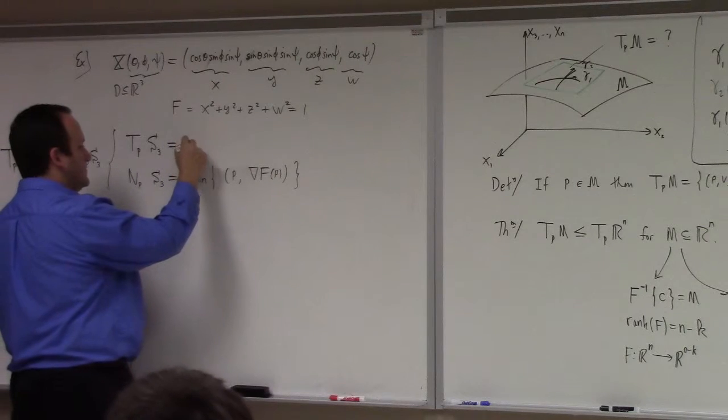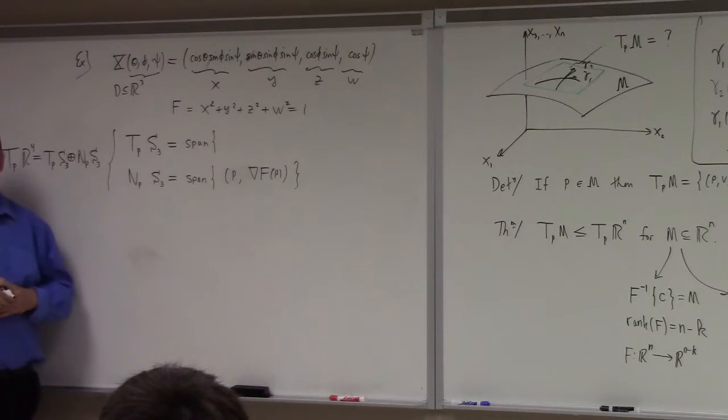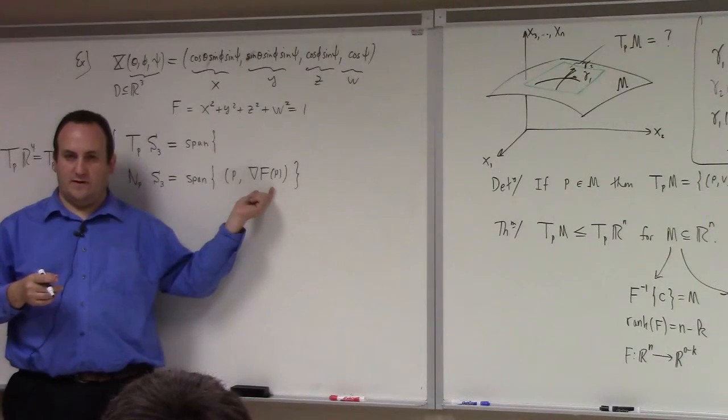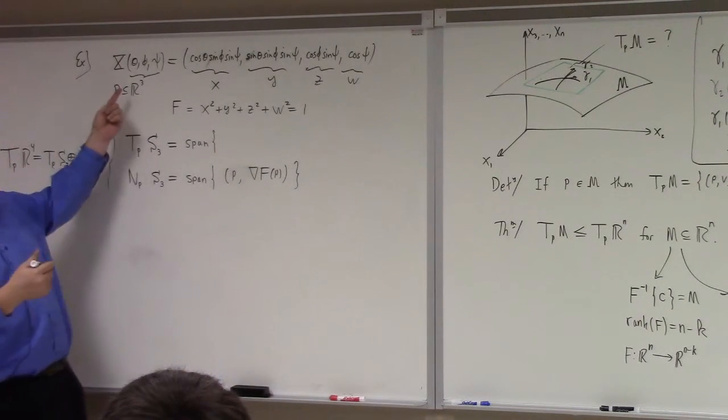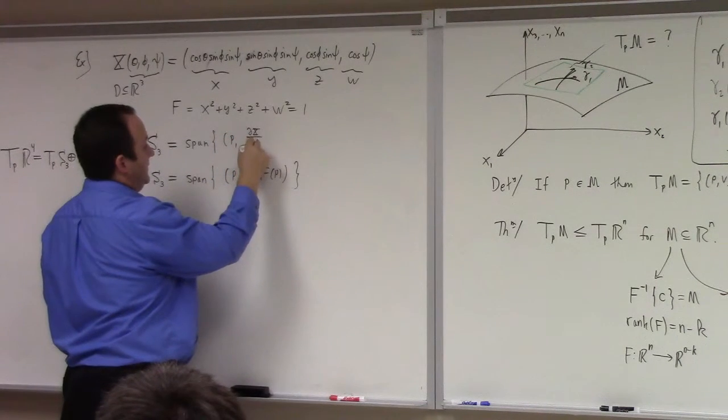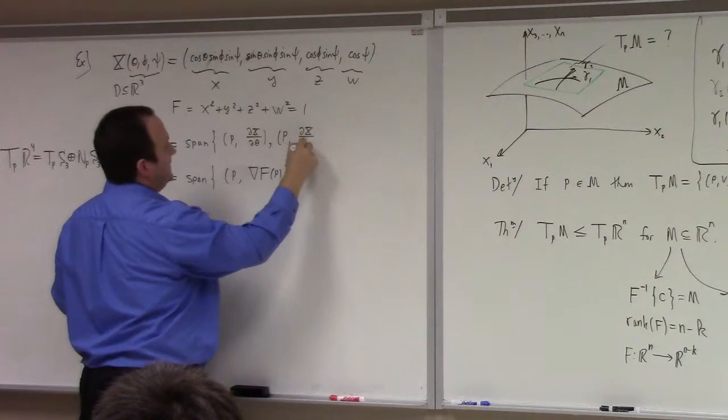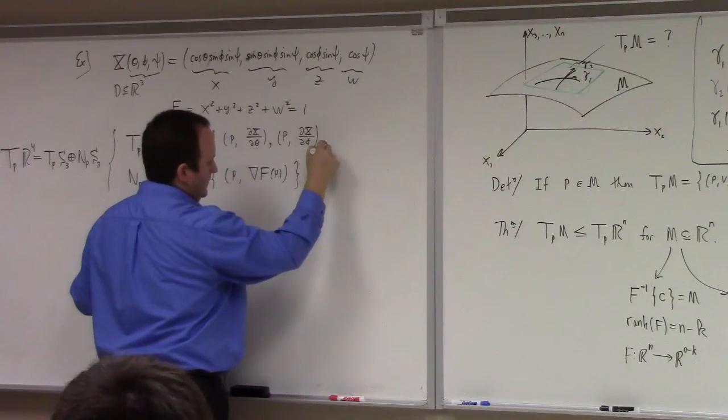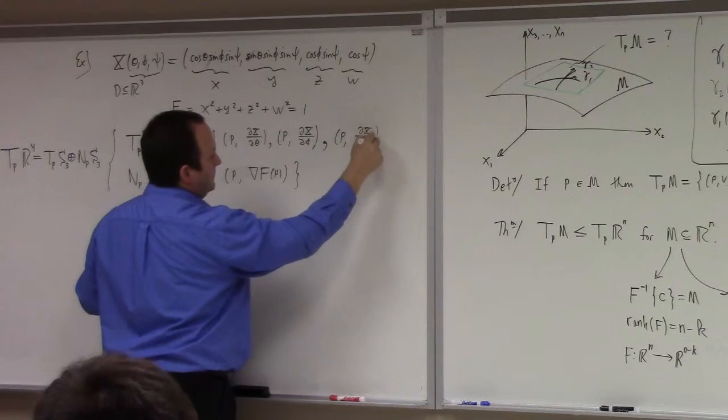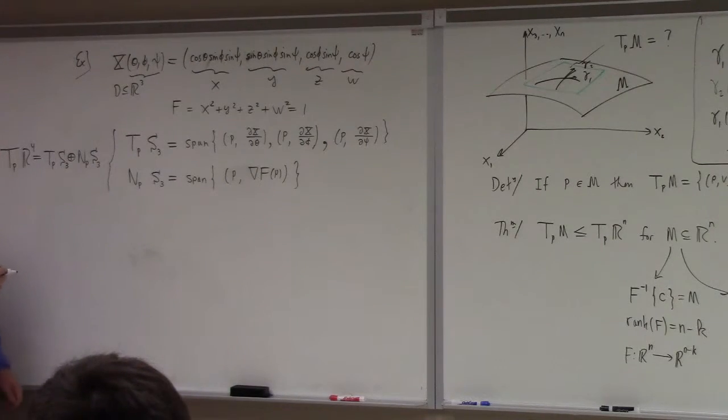Well, there are two ways to do it. One way, you could calculate the orthogonal complement to this. Wouldn't be too hard. But there's a more direct way here, since I have the parametrization. What it is, is you just do P partial x partial theta, P partial x partial phi, P partial x partial psi. Now, the partial derivatives, where should they be evaluated?